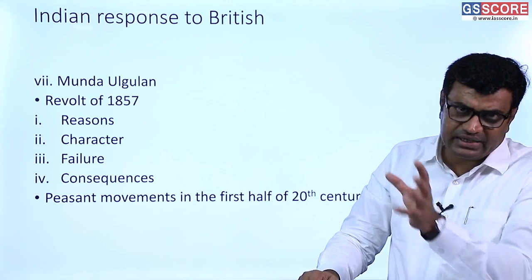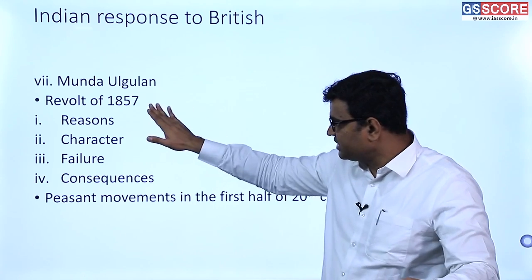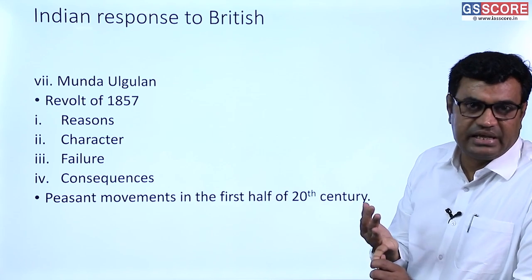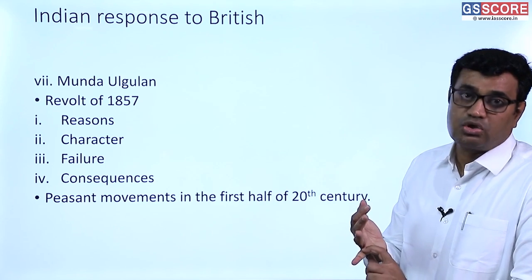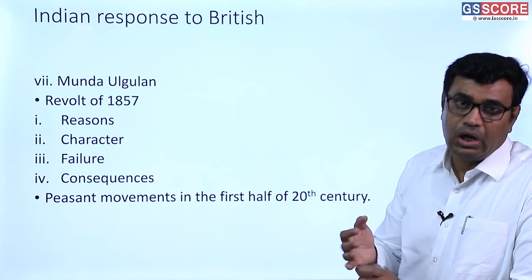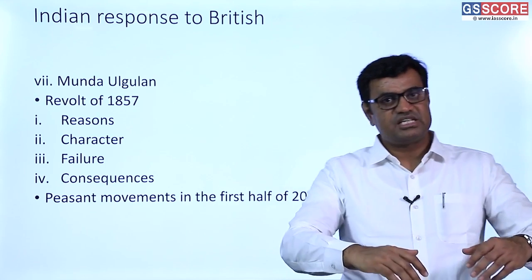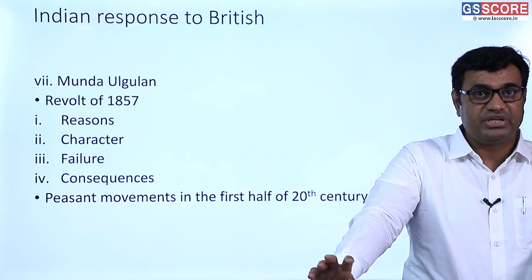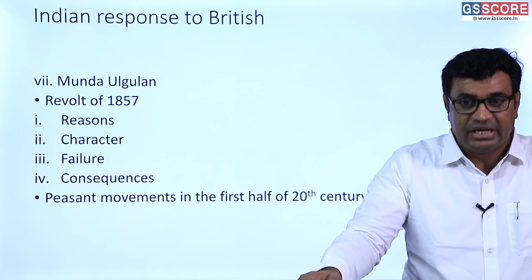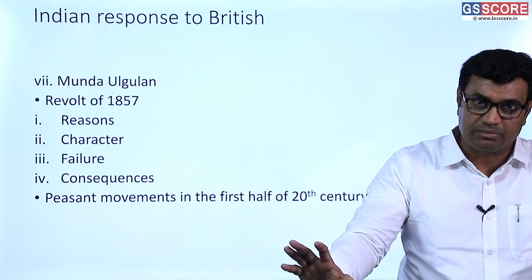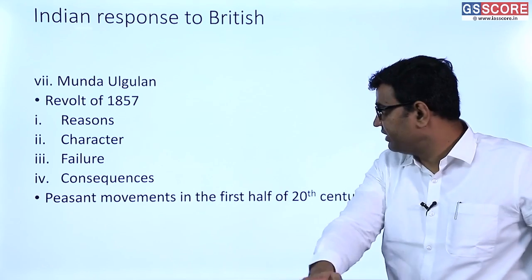Apart from these pocketed responses, one major development was the Revolt of 1857. Reasons included economic exploitation, political expansion of British, and social-religious policies affecting people's sentiments. The character of the revolt is debated — some British scholars called it only a mutiny of Indian soldiers, but it was largely supported by the peasantry class, making it a popular revolt. All these major characters define the Revolt of 1857.